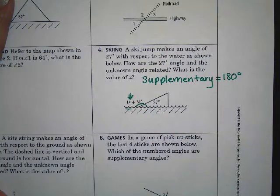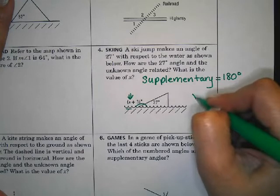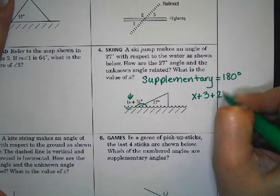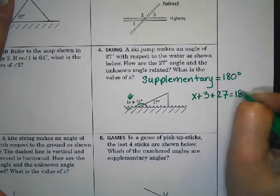So the equation that we're going to write is x plus 3 plus 27 is equal to 180 degrees.